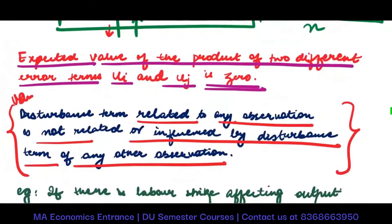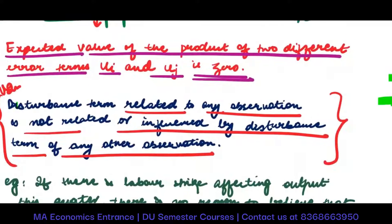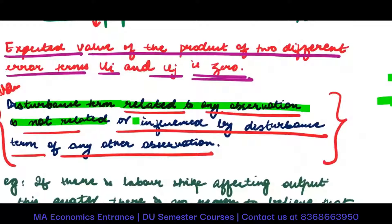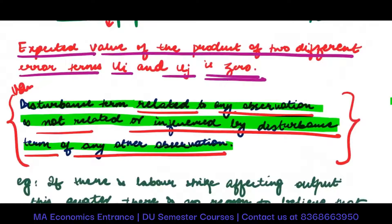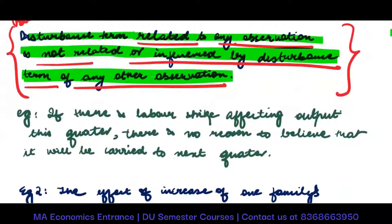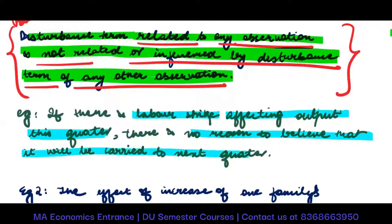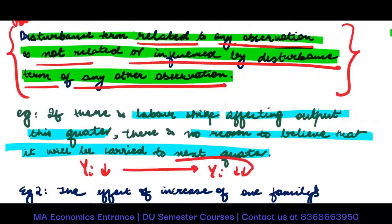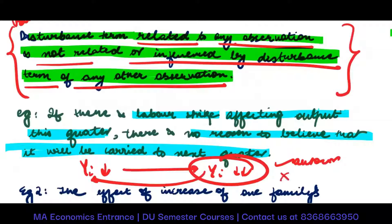Whatever prediction error you make here is in no way correlated to the prediction error you will make in the next period — that is called no autocorrelation. For example, if there is a labor strike affecting output this quarter, there is no reason to believe it will carry to the next quarter. Just because output reduced this quarter doesn't mean output in the next quarter will also reduce. If it does reduce because of this, then there is autocorrelation; if it doesn't, then there is no autocorrelation.